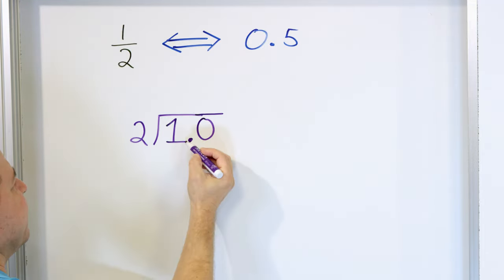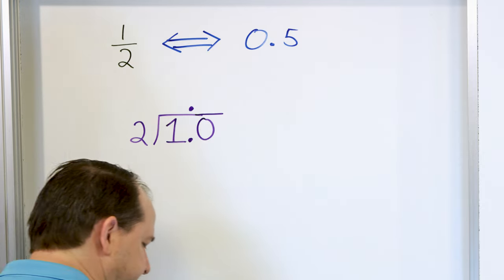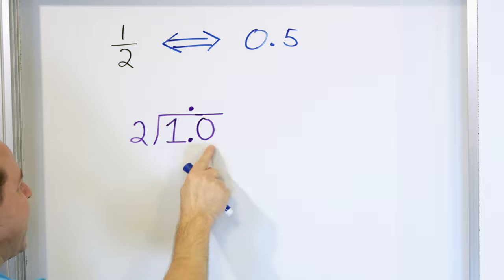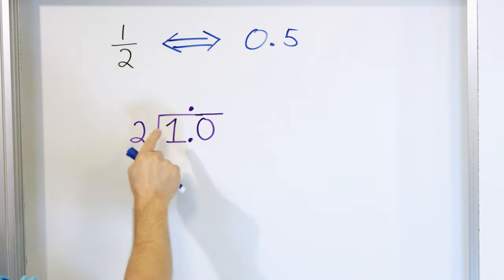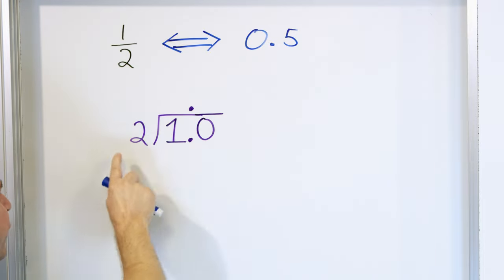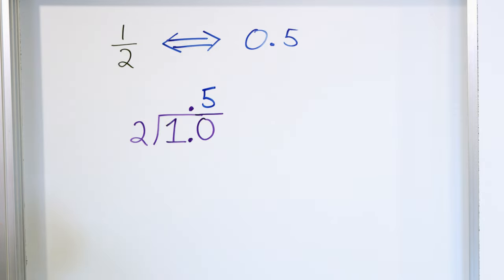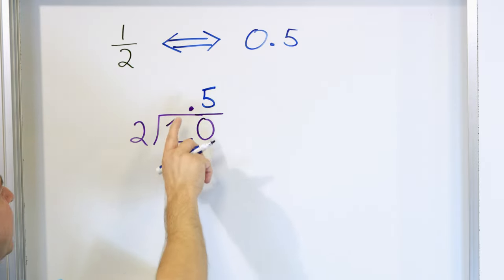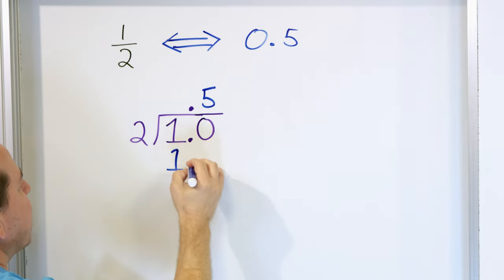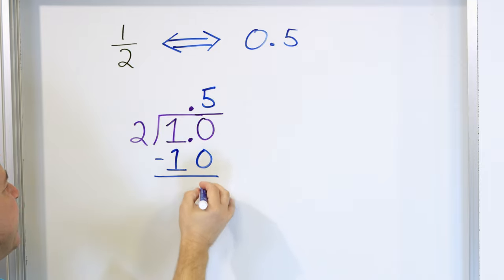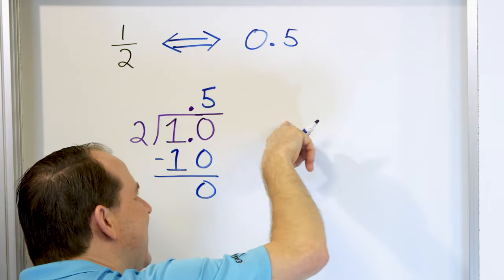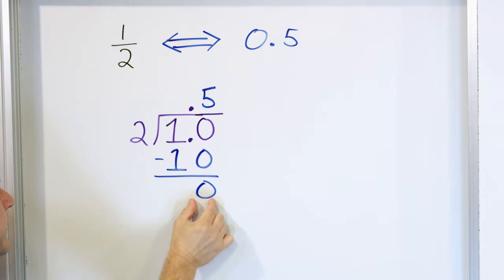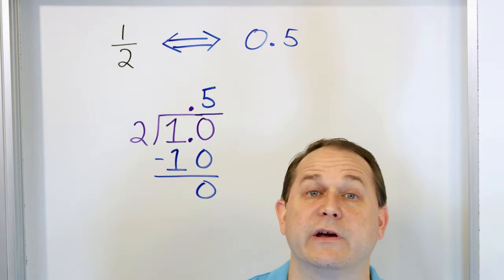When we divide decimals, the decimal point floats up and that's where the decimal will be in our answer. Now we ignore the decimal completely. We have a 1 and a 0 — a 10. Can 2 go into 10? 2 times 5 is 10, so a 5 goes right here. We multiply and write 10 down, then subtract: 10 minus 10 is 0. There are no other digits, so we stop. You want to continue the decimal division process until you get a remainder of 0.